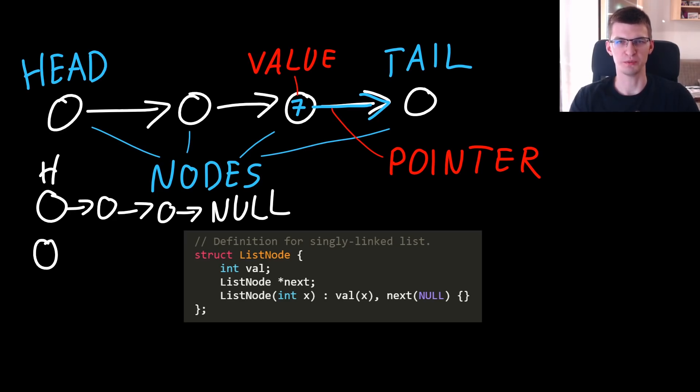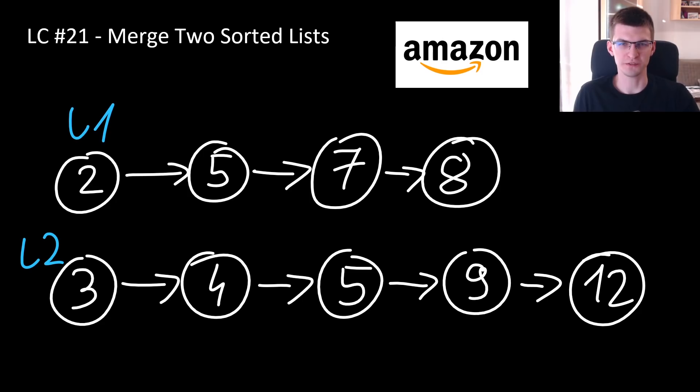Now we are ready to solve the problem. Given pointers to head of the first list and head of the second list, let's say L1 and L2, we can easily find the first node in the sorted combined list, because it will be smaller of those two. Here 2 is smaller than 3, so for sure this will be head of the combined list.